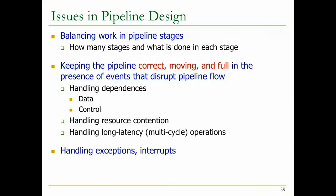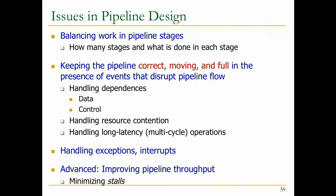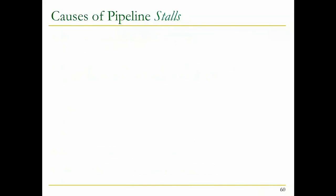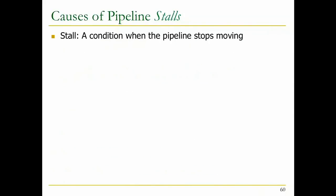Handling exceptions and interrupts is important. If you get an interrupt, we've really broken the von Neumann model internally - we're not updating the architectural state sequentially. You need to ensure that the von Neumann sequential execution model is not broken. We'll talk about that. And of course improving pipeline throughput by minimizing stalls. The causes of pipeline stalls: a stall is a condition when the pipeline stops moving. It could happen because of resource contention, because a resource is needed by two different stages, because of dependencies, or because of long latency operations.